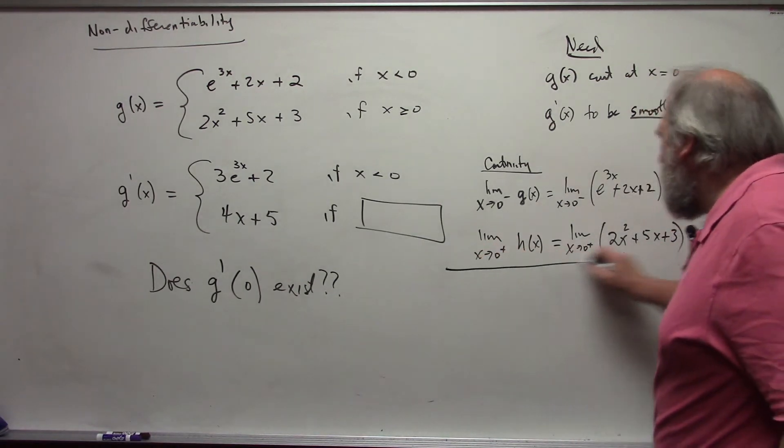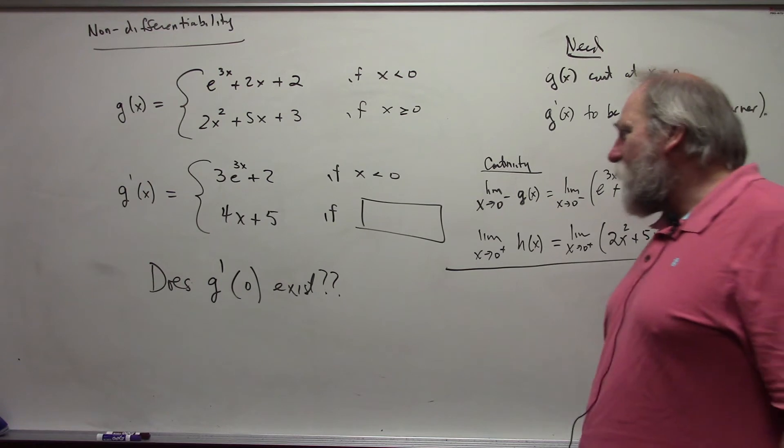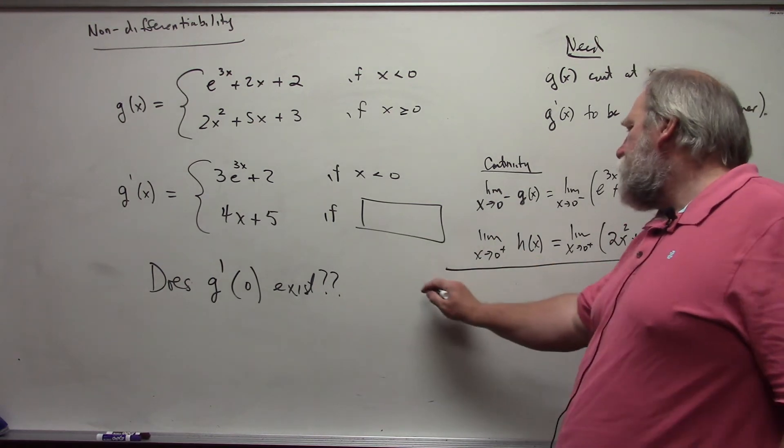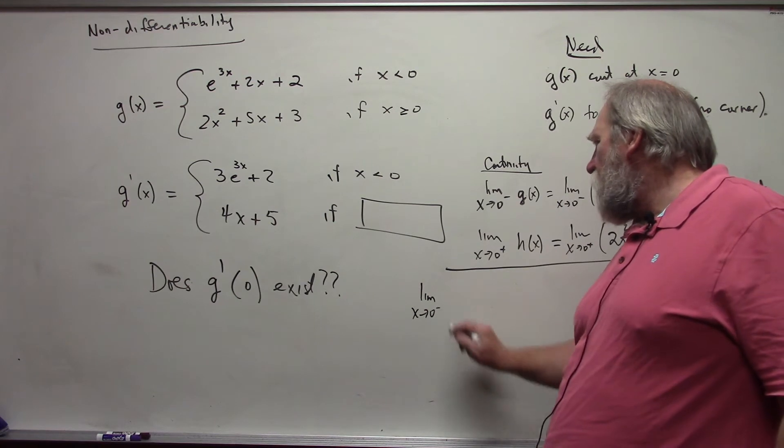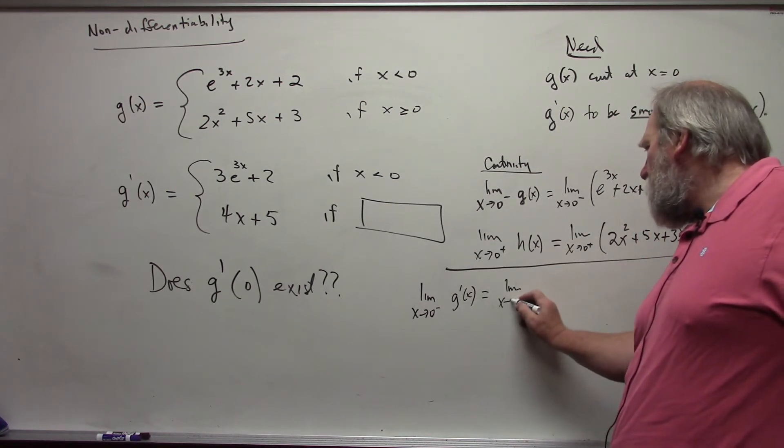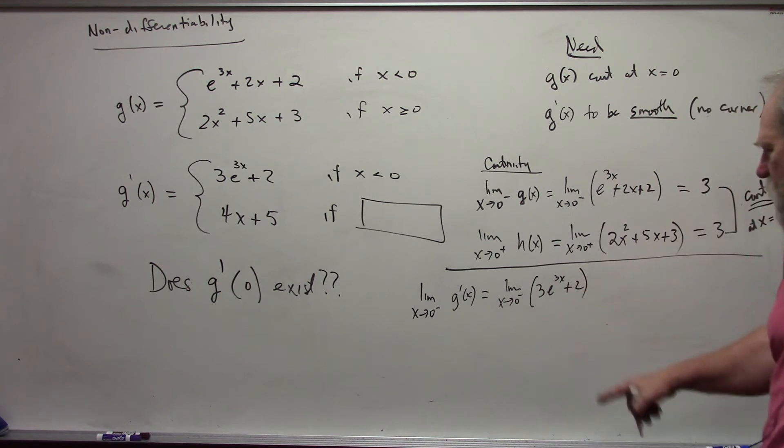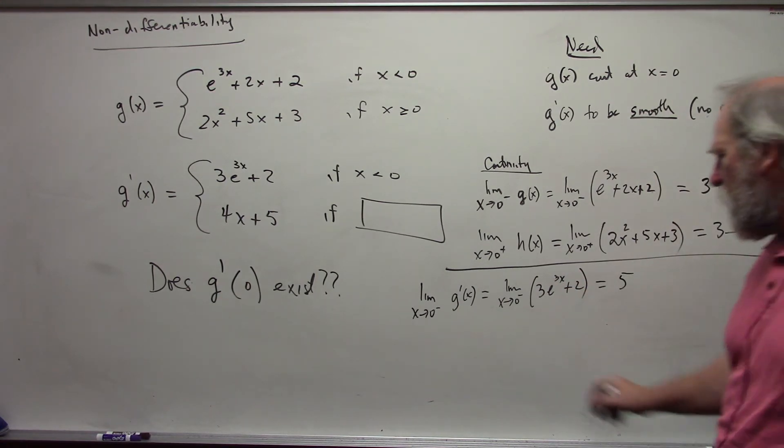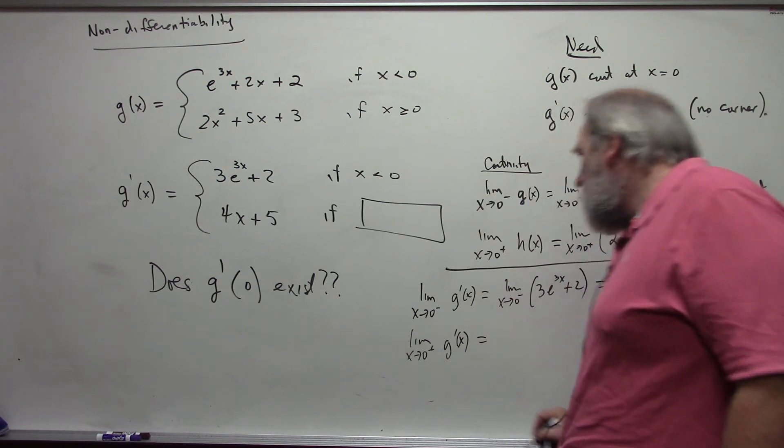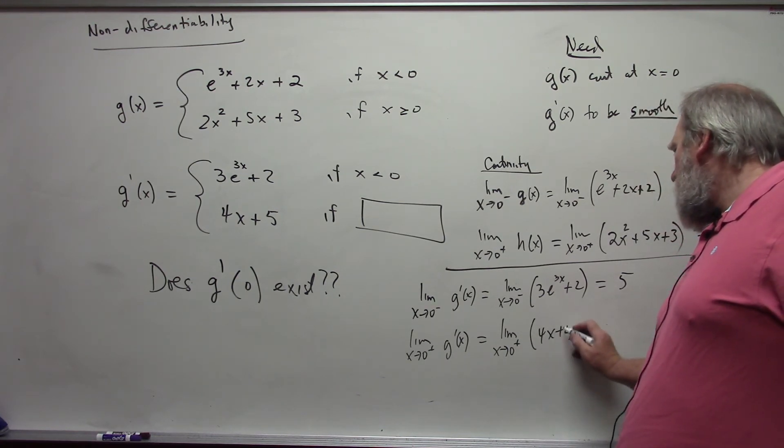So that means we now have to check the second part of this. I need to make sure that my derivative is smooth. And for that, we do the exact same situation here. We take the limit from both sides of the derivative function. The limit as x approaches 0 from the left of g prime of x is the limit as x approaches 0 from the left of 3e to the 3x plus 2, which is 3 plus 2, which is 5. The limit as x approaches 0 from the right of 4x plus 5, which is 5.